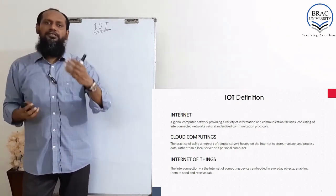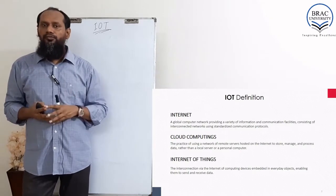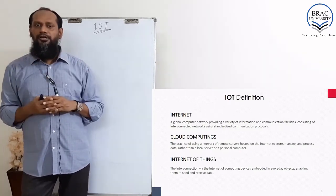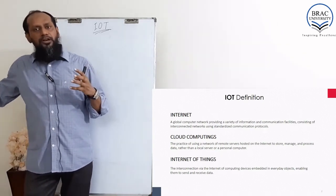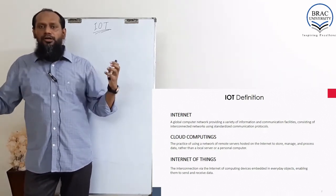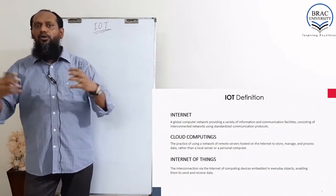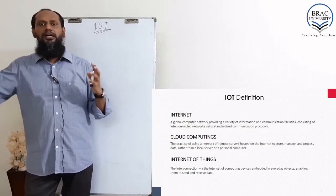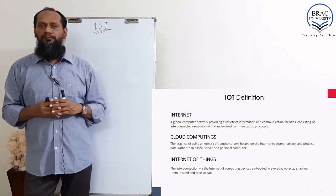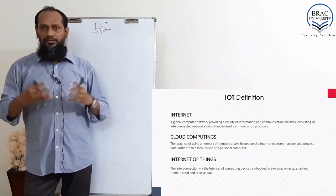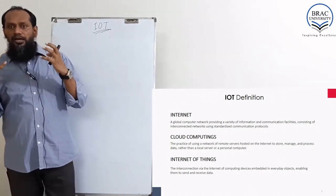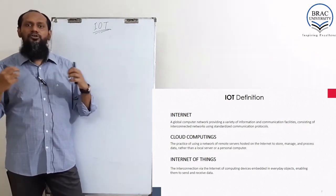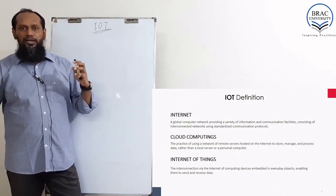Or it might happen that when I come back home, my air conditioner will turn on automatically before I reach home. If my cell phone is connected to a geofencing feature, the air conditioner will know that I'm around the home and will be there within five minutes — so it starts the air conditioner and I get a nice environment. That's why IoT will become so popular.